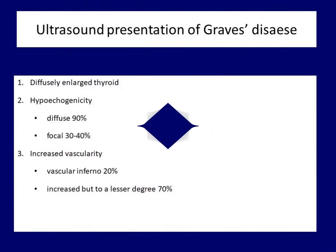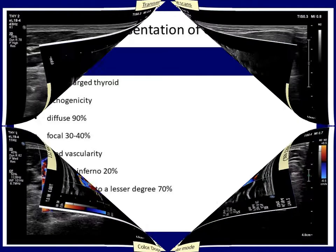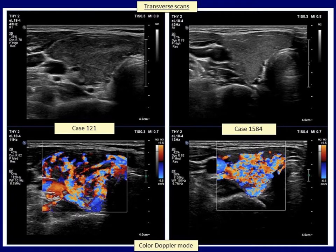There are three characteristic features of Graves hyperthyroidism: the thyroid is hypoechoic, vascularity is increased, and the thyroid is enlarged. Compared to lymphocytic thyroiditis, diffuse hypoechogenicity is significantly more frequent while focal hypoechogenicity is significantly rarer in Graves disease. The almost pathognomonic vascular inferno can be found in around a quarter of patients, typically those presenting with severe hyperthyroidism. These two examples are almost diagnostic of Graves disease — the left patient has moderate hyperthyroidism, the right has minimal hyperthyroidism, and both present with extremely increased thyroid vascularity.